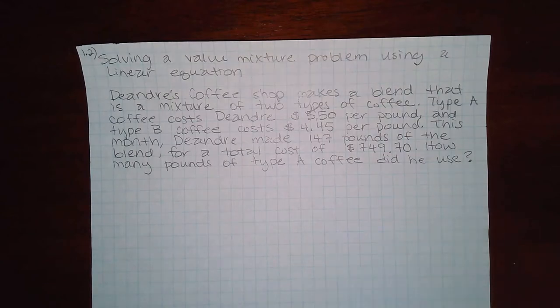Type A coffee costs D'Andre $5.50 per pound, and type B coffee costs $4.45 per pound. This month, D'Andre made 147 pounds of the blend for a total cost of $749.70.